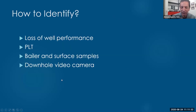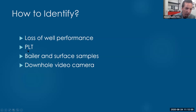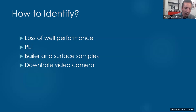How to identify - how to know that I have a formation damage? I noticed there is a loss of well performance; the wellbore is not producing as usual. Also, I can use PLT - production logging tool. I can use production logging to identify if there is any decline in the performance, or if I'm producing more water than expected. I can also get a sample that may tell me if I have bacteria like SRB or a scale problem. Also, I can send a downhole video camera, which is kind of expensive, but still something doable. These are ways to identify what is the reason for that production decline.